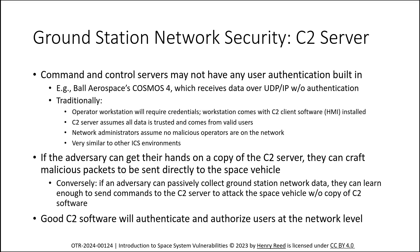The crown prize in a regular network pentest is domain admin. The crown prize in a ground station pentest is the C2 server. If you send data to the C2 server and it accepts it, it goes to space — that's as dangerous as it gets. Many C2 servers have no authentication or authorization built in. For example, Cosmos 4 just has a port open: send any data to it, and if it can decode it, it goes up to space. An adversary could get a copy of your C2 server and commanding and telemetry definitions, then script something to autonomously destroy your vehicle.